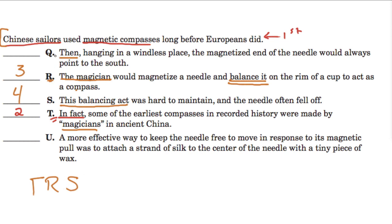And now, well, we have two choices left. And, again, let's read through them. So, U says, a more effective way to keep the needle free to move in response to its magnetic pull was to attach a strand of silk to the center of the needle with a tiny piece of wax. So, you can picture that this needle's rotating, and this silk and this wax are somehow anchoring it in the compass. So, it's saying, basically, it's contrasting, you know, from R. It's saying, from S, excuse me. So, U is contrasting S. It's saying that the balancing act was hard to maintain and the needle often fell off. So, this wasn't very effective, this balancing act. So, in contrast, in contrast to that, we have a more effective way of doing this. Now,